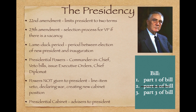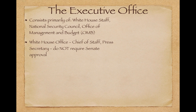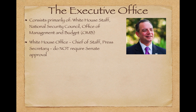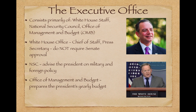The presidential cabinet is a group of advisors to the president in which the head of each department, known as a Secretary, must be approved by the Senate. The Executive Office consists of several groups: the White House Staff, the National Security Council, and the Office of Management and Budget (OMB). In the White House Office, the Chief of Staff and the Press Secretary do not require Senate approval, unlike many other presidential appointments.